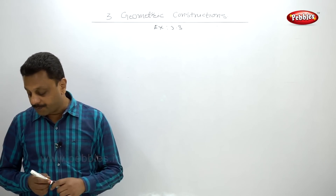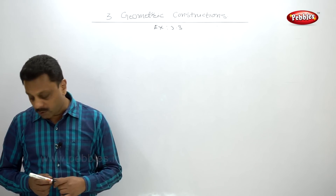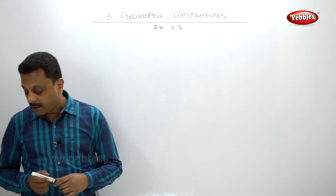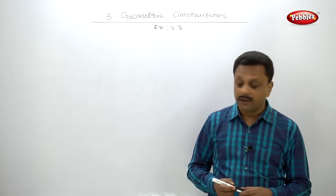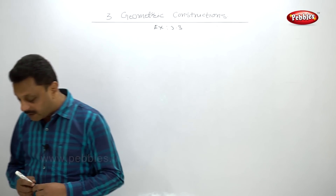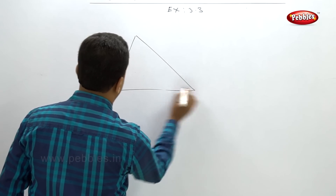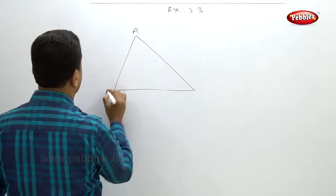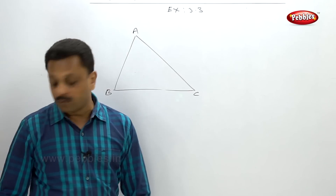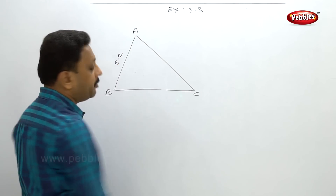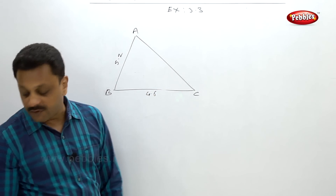They are given AB is 5.2, BC is 4.6, and angle B is 45 degrees. Also, they are given BC upon EF is 2 by 3. Construct triangle DEF. You can solve this by both methods. First, construct triangle ABC as given: AB is 5.2, BC is 4.6, and angle B is 45 degrees.